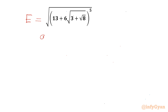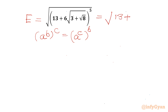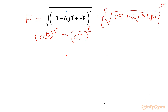I will use the property of exponents: (a^b)^c equals (a^c)^b, swapping the powers. So I will rewrite this as the square root of 13 plus 6 times square root 3, plus square root 8, whole to the power 5. I will consider this curly bracket equal to x, so ultimately we are looking for x to the power 5.